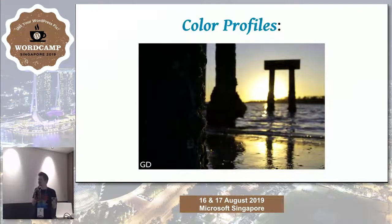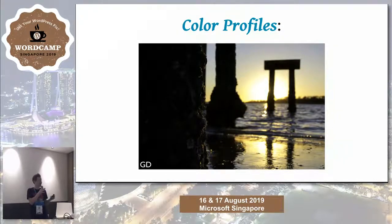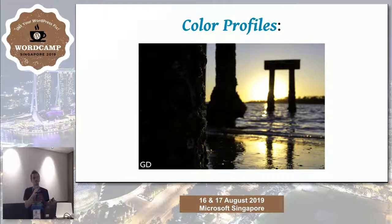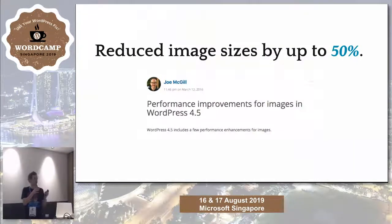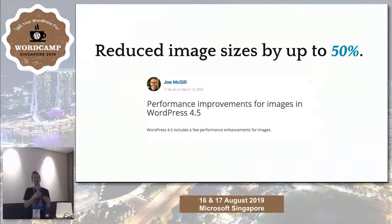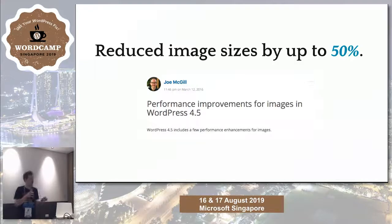One advantage of Imagick is color profiles. If you have a custom profile like Adobe RGB and upload it, GD isn't able to save color profiles, so your resized images might look a little funny. With Imagick, you get more accurate colors matching the original. Also, in WordPress 4.5, we were able to reduce image sizes hugely — down up to 50% total size — because with Imagick we can be more specific about what information stays in the image and how compression works, without changing how it looks visually to users at all.